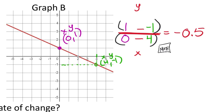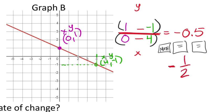To change this into a fraction: in the top left you'll see the button that says math, right below the alpha button. Push enter, enter, and the calculator changes that decimal into a fraction—negative 1 over 2. That's the rate of change for graph B.